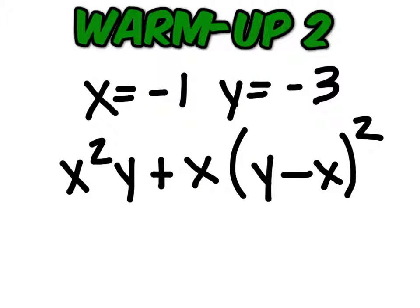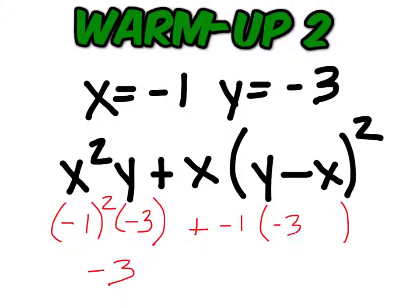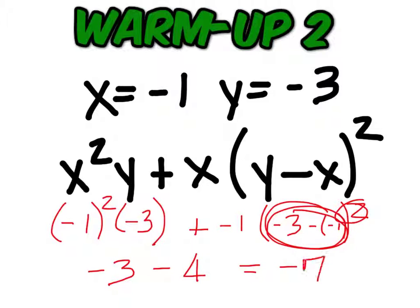Okay, so x squared, you're going to have negative 1 squared times negative 3 for this part. Did you come up with negative 3? Yeah. Okay, so then we'll have plus a negative 1 times the quantity of negative 3 minus a negative 1, then square that. So did you get a 2 for inside here? And then 2 squared is 4? Yeah. Alright, so we should end up with negative 7.